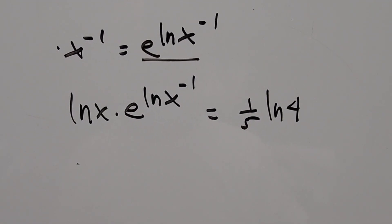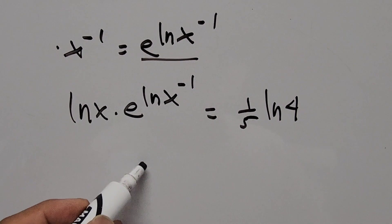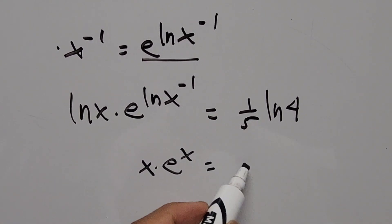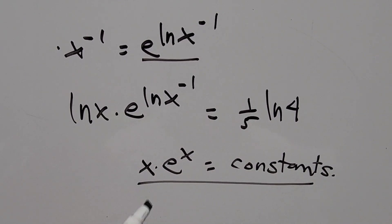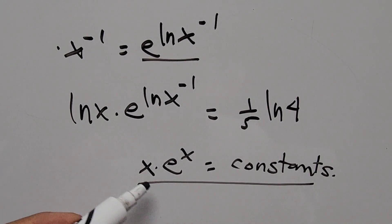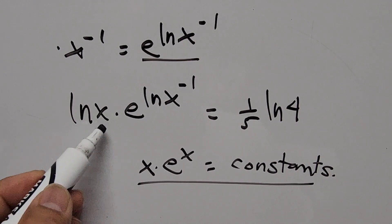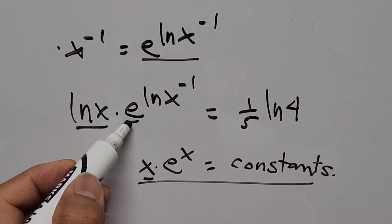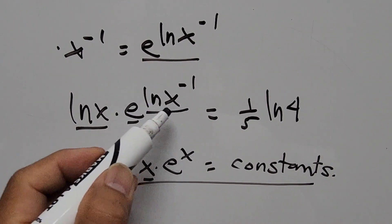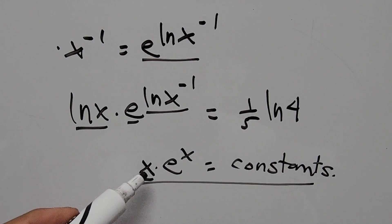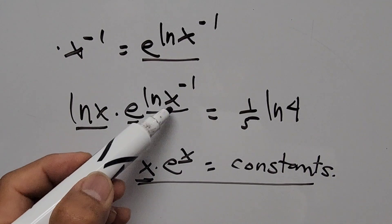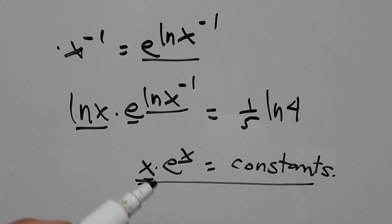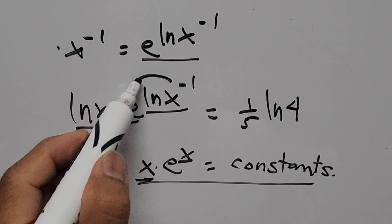To find our solution we'll be using the Lambert W function to solve for x. We're looking for the format: x times e to the power of x equals some constant. In our equation, ln of x is considered the x-term, and e to the power of ln of x to the negative 1 is the exponential part. Notice the base and the exponent must be the same — currently the exponent is negative 1, so we take that exponent to the front.